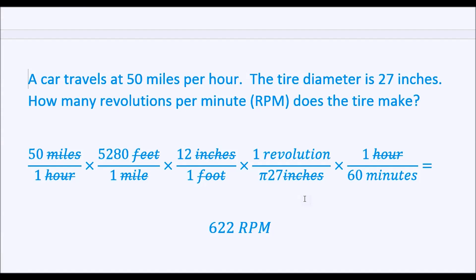So the process of solving this would be 50 times 5280 times 12, divide pi, divide 27, divide 60. And that gives us 622 RPM.